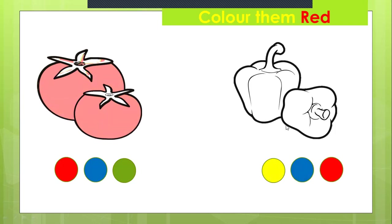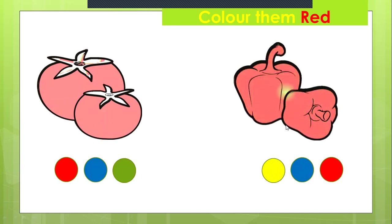How about the bell peppers? Can we color like this? No, that is a green one — it's not red. How about this one? It's more red now. Bell peppers are between red and pink. They are not so ripe yet, so they are not so red.